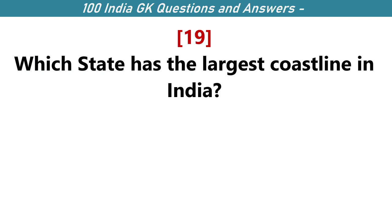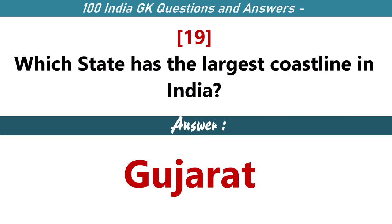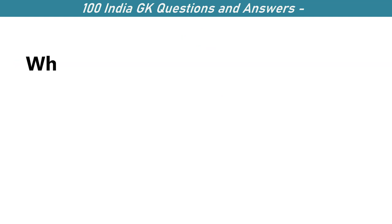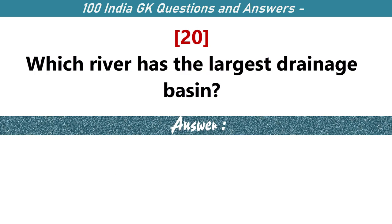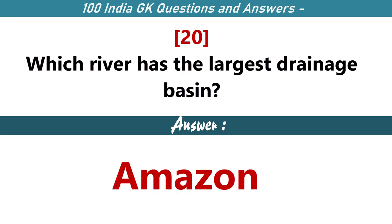Which state has the largest coastline in India? Gujarat. Which river has the largest drainage basin? Amazon.